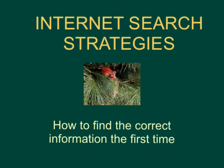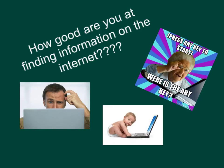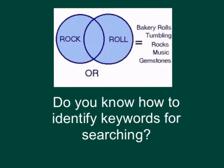Hi, this is an internet strategy tutorial showing you how to find the correct information the first time. How good are you at finding information on the internet? Do you know how to identify keywords for searching? Such as rock and roll - does that take you to music? Or were you looking for bakery rolls, a rock and roll tumbling gymnastics class, or rocks rolling to be polished for making gemstones? There are many different ways you need to fine-tune your research to make sure you're getting the information you need.